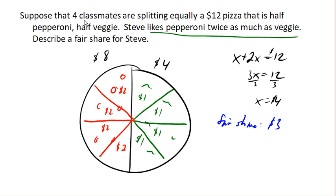One would be 3 slices of veggie pizza. He would value that as $3. We could also give him 1 slice of pepperoni and 1 slice of veggie. He would value that at $3.